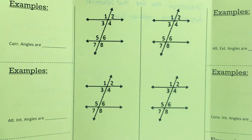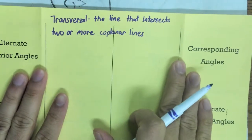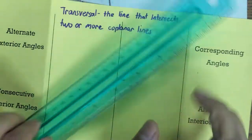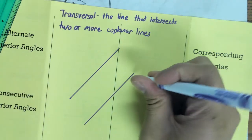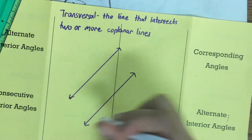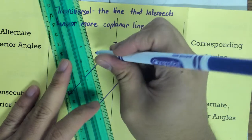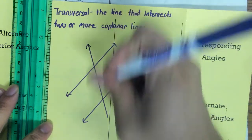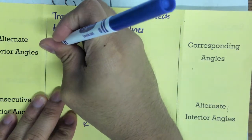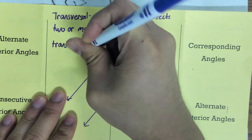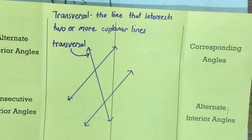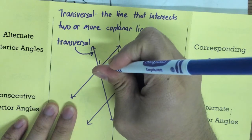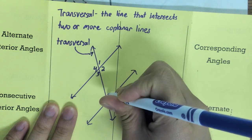Today we will go over transversals and parallel lines, and we will begin with the vocabulary for this unit. A transversal is the line that intersects two or more coplanar lines. For example, if I have these two lines, the transversal will be the one line that cuts across my other lines. When we talk about transversals, we have angles formed, and we are going to look at the special terms and properties for these angles.